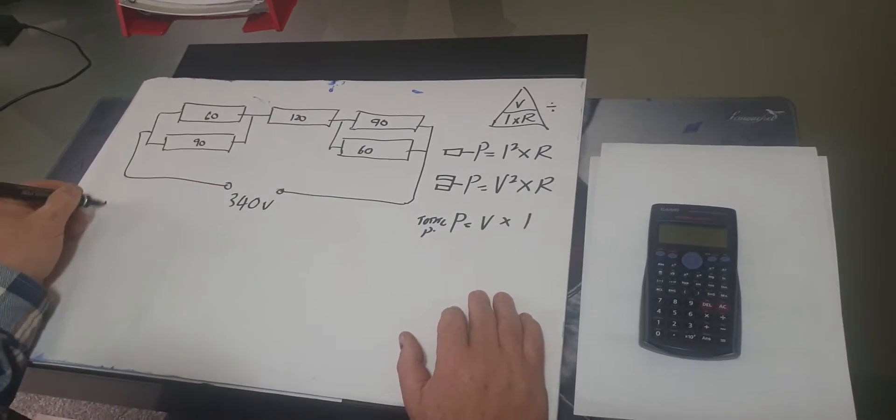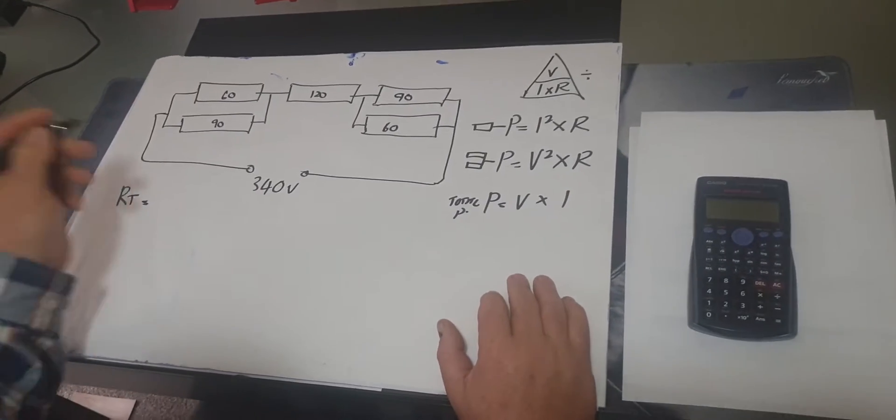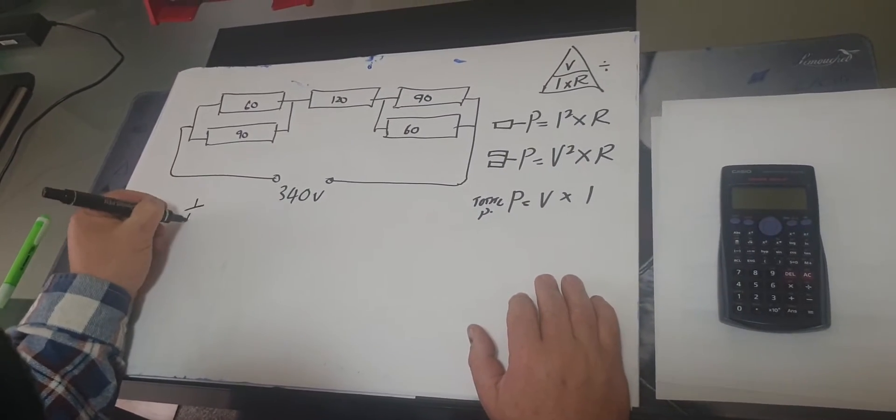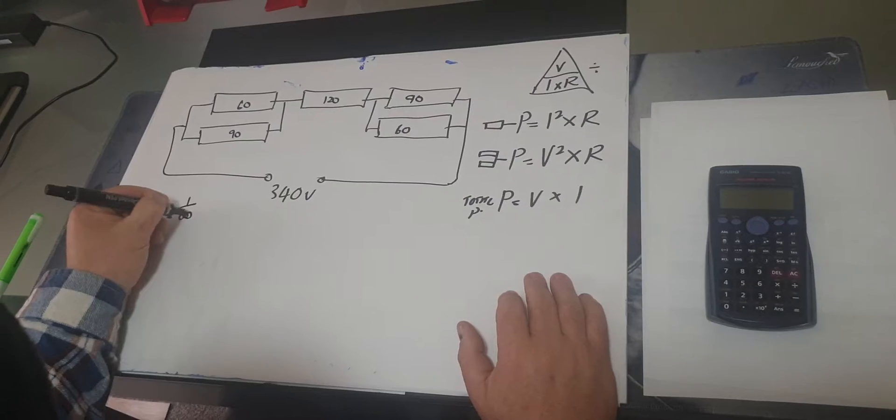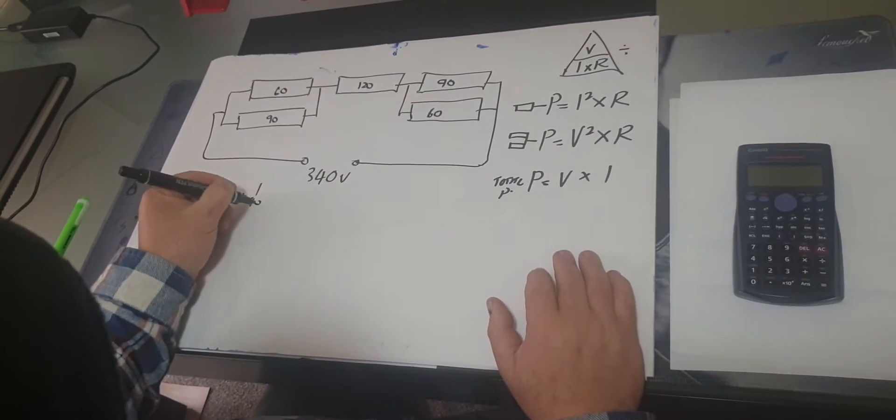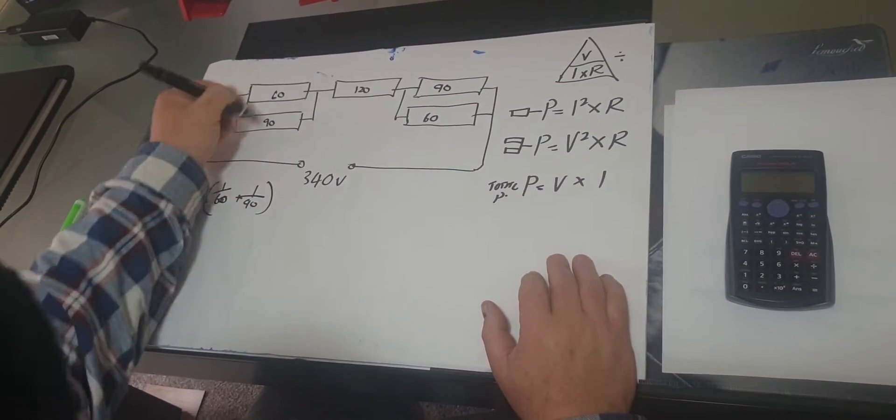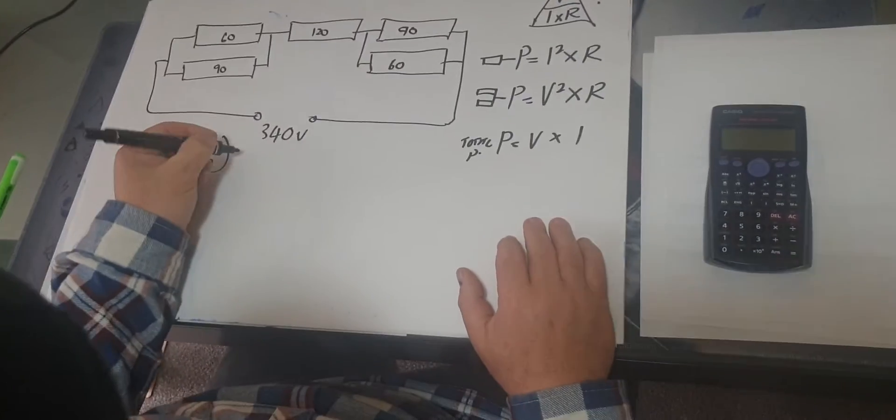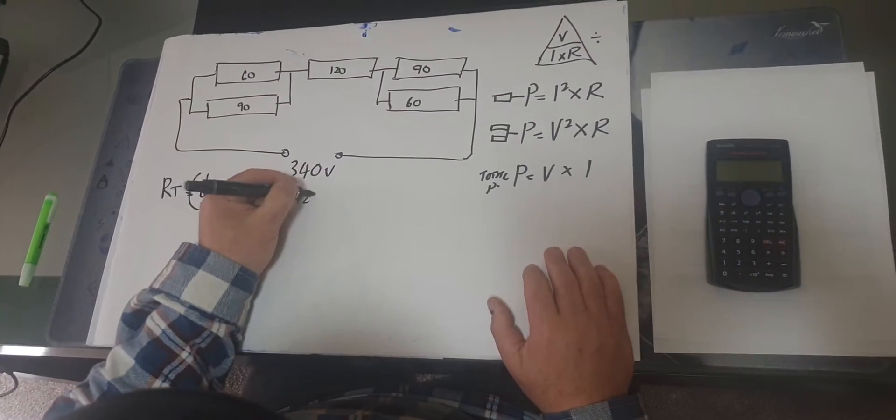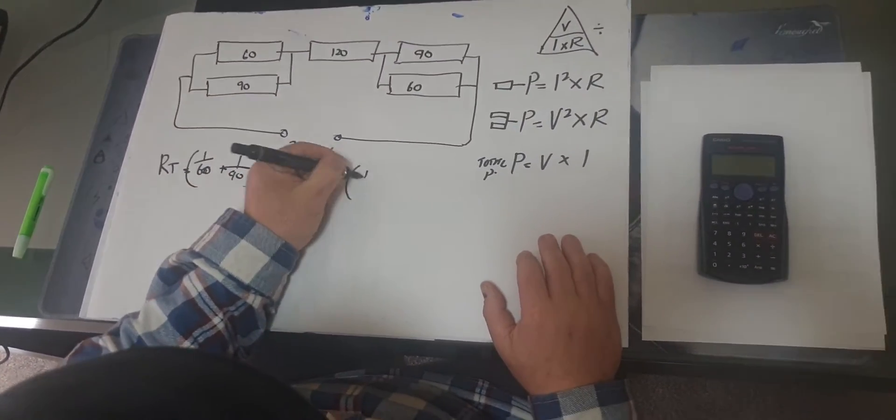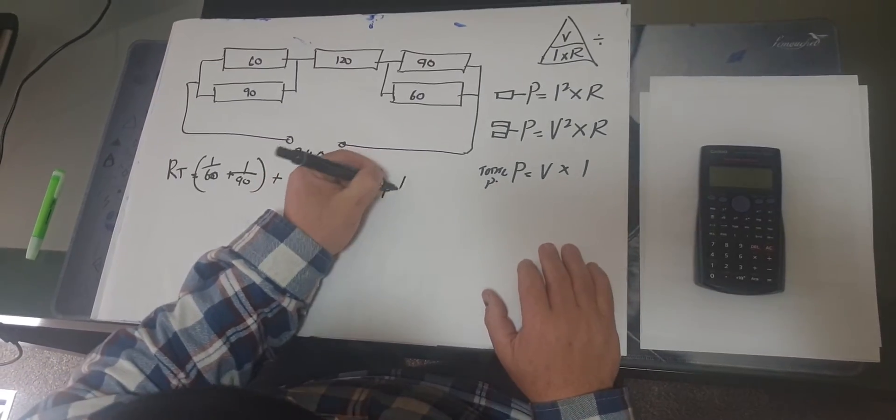Okay, so first thing we always need to look for is resistance total. So what we'd be doing is 1 over 60 plus 1 over 90 - that gives us these two here - plus the 120 plus the 1 over 90 plus the 1 over 60.